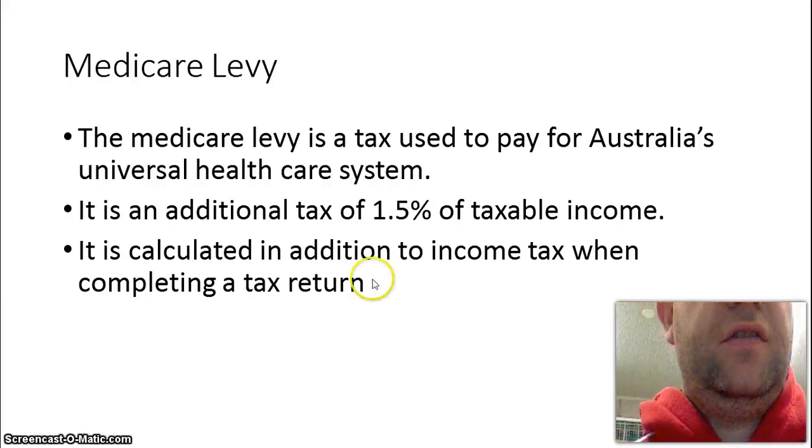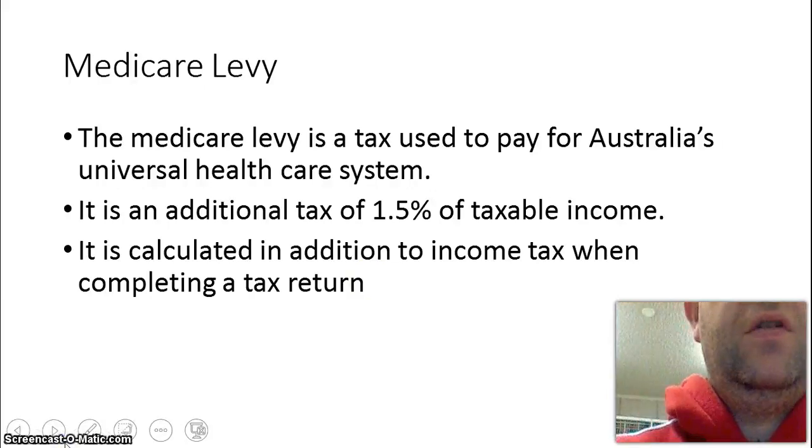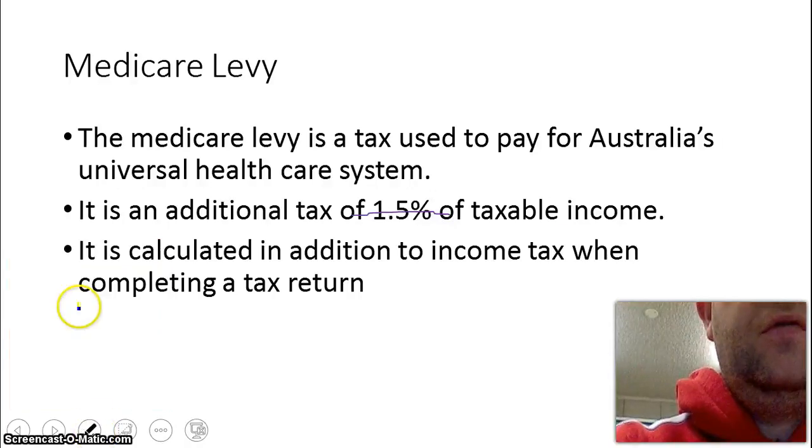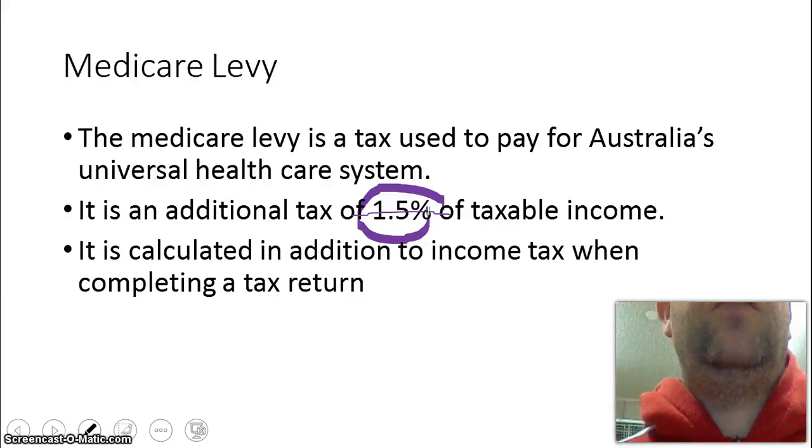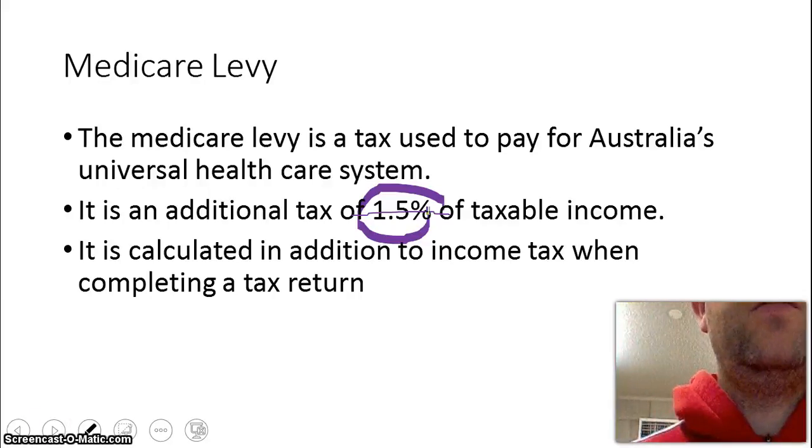It's an additional tax of 1.5% on your taxable income. 1.5% of taxable income and it's calculated in addition to your income tax but you do it when you do your income tax.